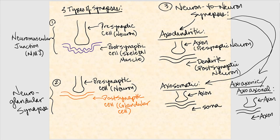The third type of synapse is what's called a neuron-to-neuron synapse — the presynaptic cell is a neuron and the postsynaptic cell is another neuron. The first type of neuron-to-neuron synapse is axodendritic: the axon of the presynaptic neuron synapses with the dendrite of the postsynaptic neuron. The axo part refers to neuron number one, the presynaptic neuron, and the dendritic part refers to the dendrite of cell number two, the postsynaptic neuron.